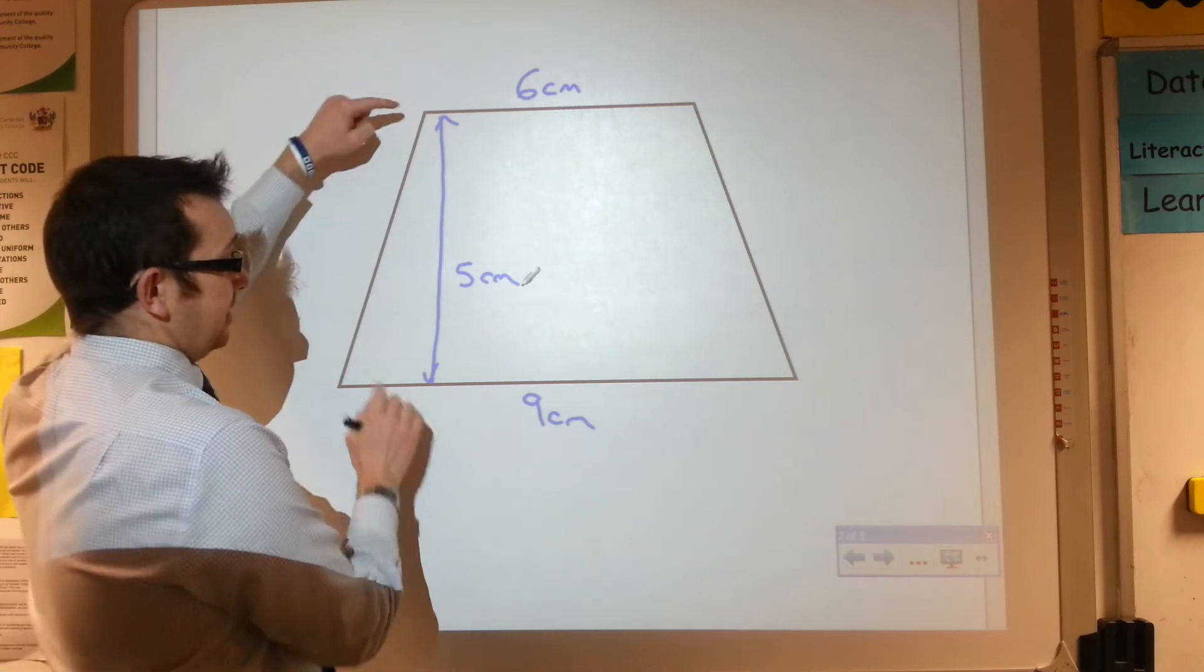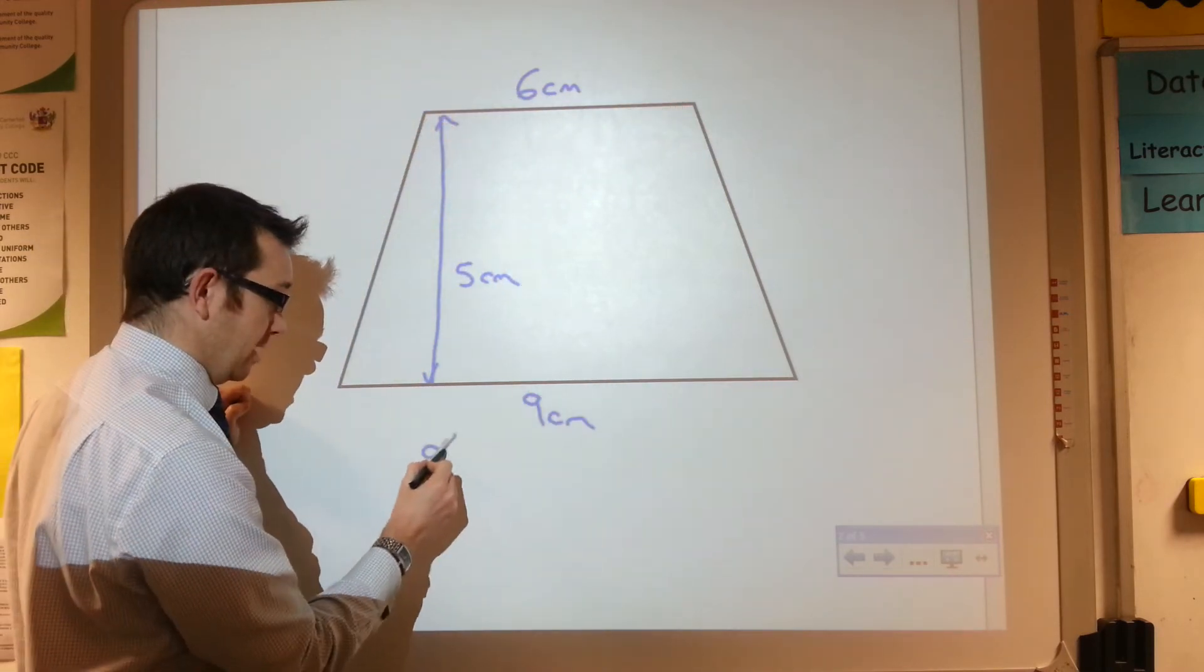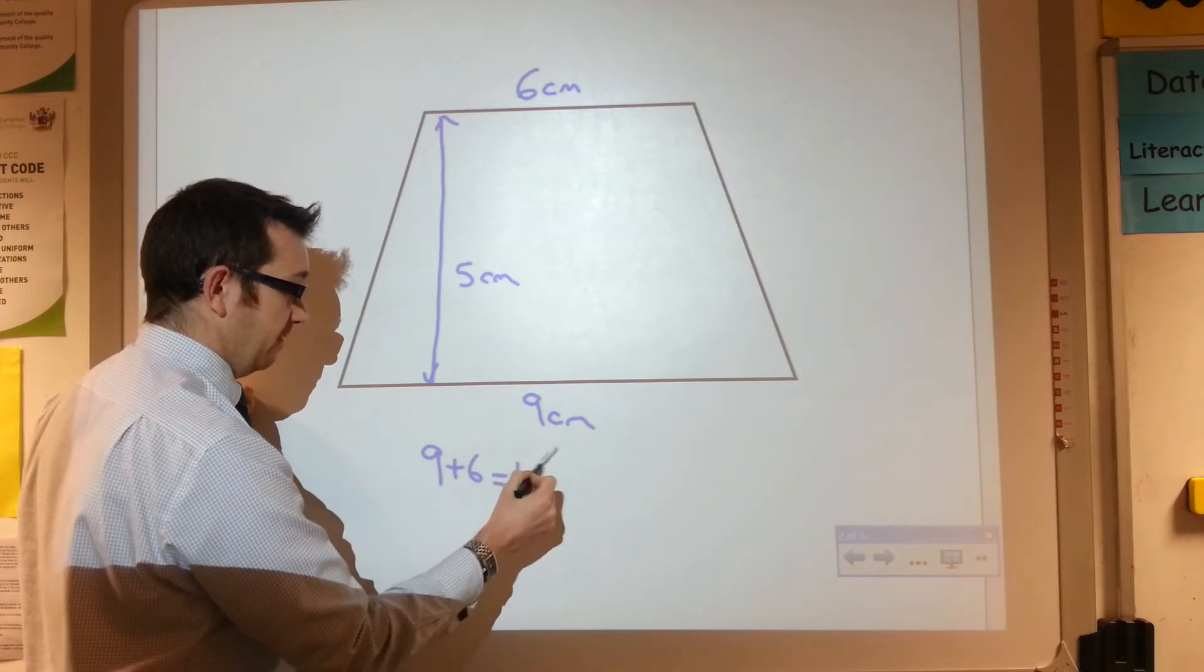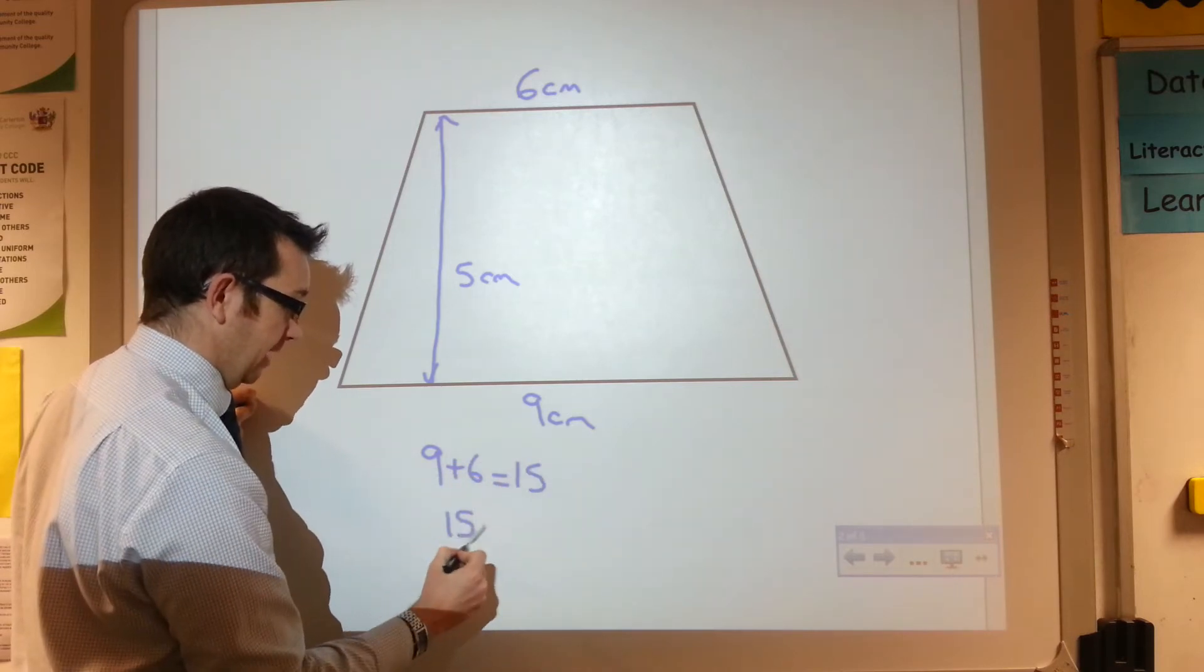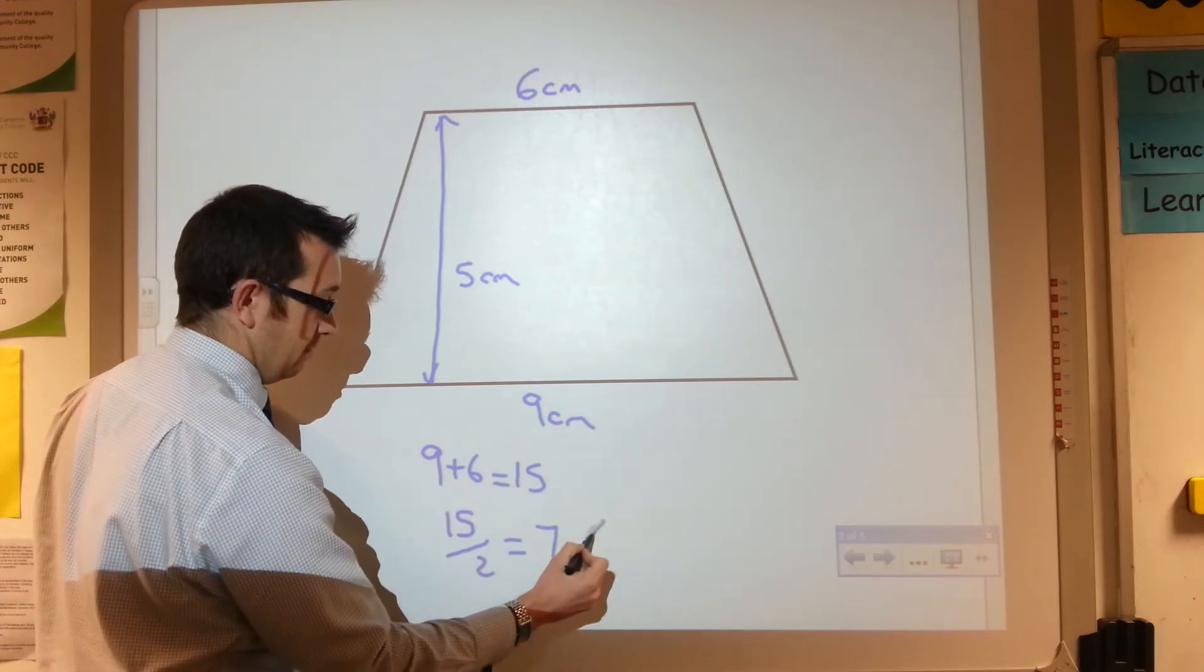So my first job is to find the average of these two lengths. And the way I can do that is 9 and 6, that's 15. And then I'm going to do 15 divided by 2, and that gives me 7.5.